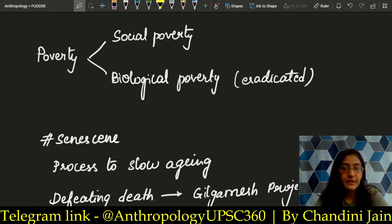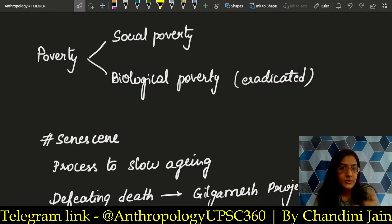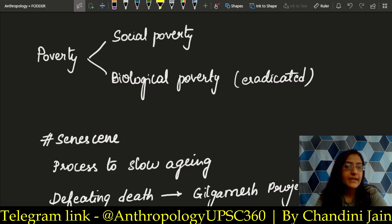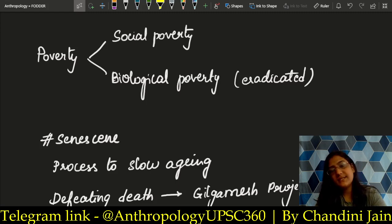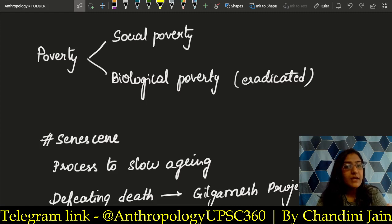There are two kinds of poverty: social poverty and biological poverty. Biological poverty — we have largely eradicated it. We no more suffer from wars and famines to the same extent. But social poverty, because it is based on social standards, can never be completely eradicated. So when we say poverty cannot be eradicated, we are talking about social poverty. Technologically, we have advanced so much that biological poverty is barely visible.